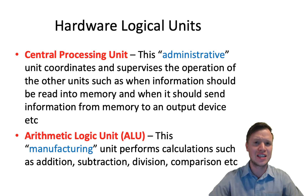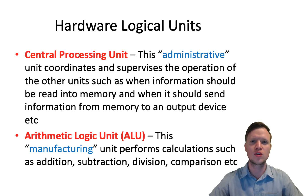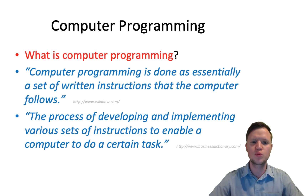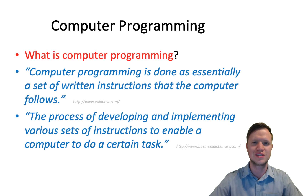So that's a computer — all the hardware and software, everything tangible and intangible. Now we can get to software programming. Computer programming is essentially a set of written instructions that the computer follows. Another definition states that it's the process of developing and implementing various sets of instructions to enable a computer to do certain tasks.